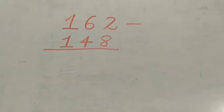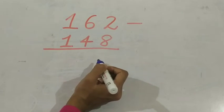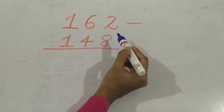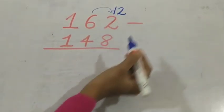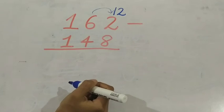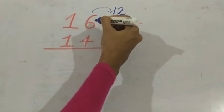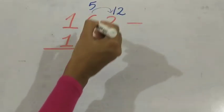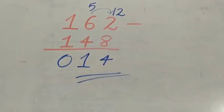Now another problem. The numbers are 162 and 148. I am going to subtract. First, 2 minus 8 — is it possible to minus 8 from 2? No. So we will take 1 to this side. So here 12. 12 minus 8 is 4. We took 1 from the tens place, so here only 5. 5 minus 4 is 1. And 1 minus 1 is 0. So the answer is 14.